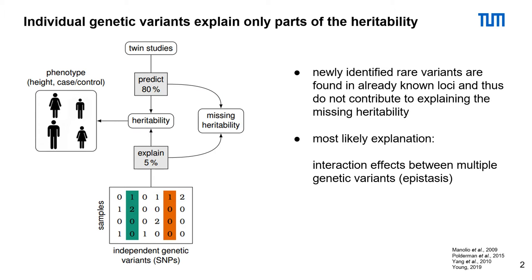In the past, many studies were conducted on the heritability of height. Twin studies predicted about 80% of the heritability. Considering only independent genetic variants can account for about 5% of the heritability.